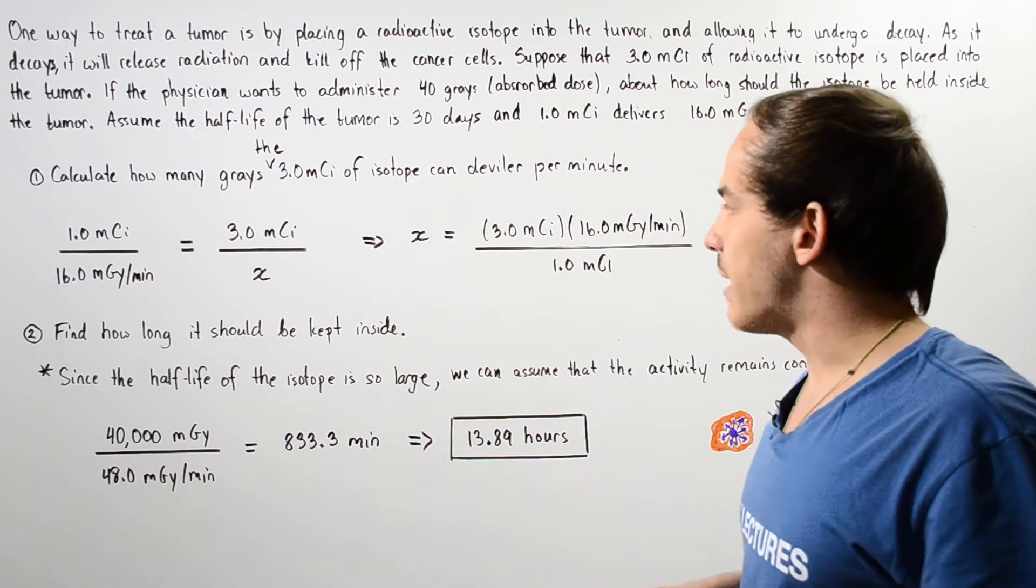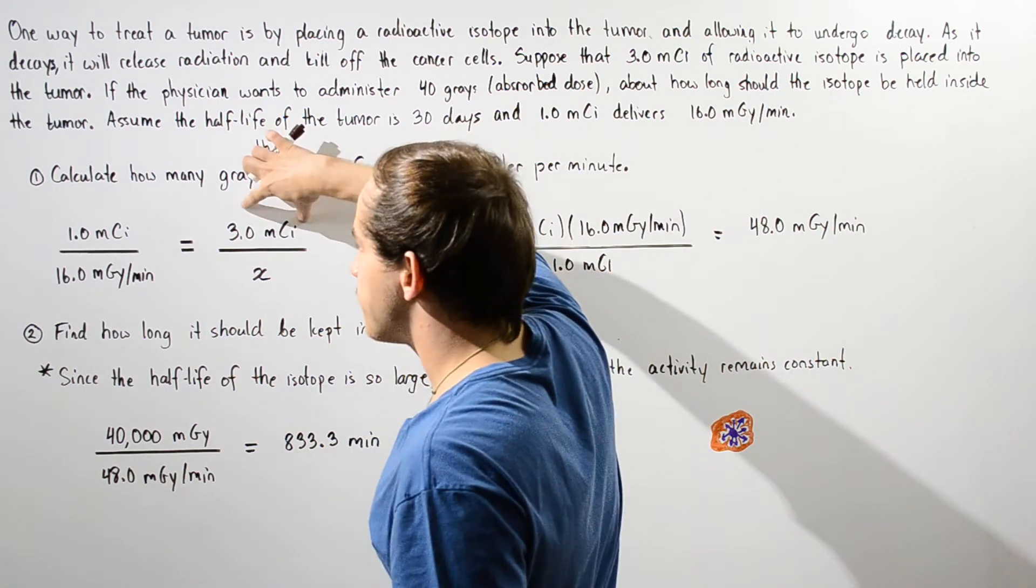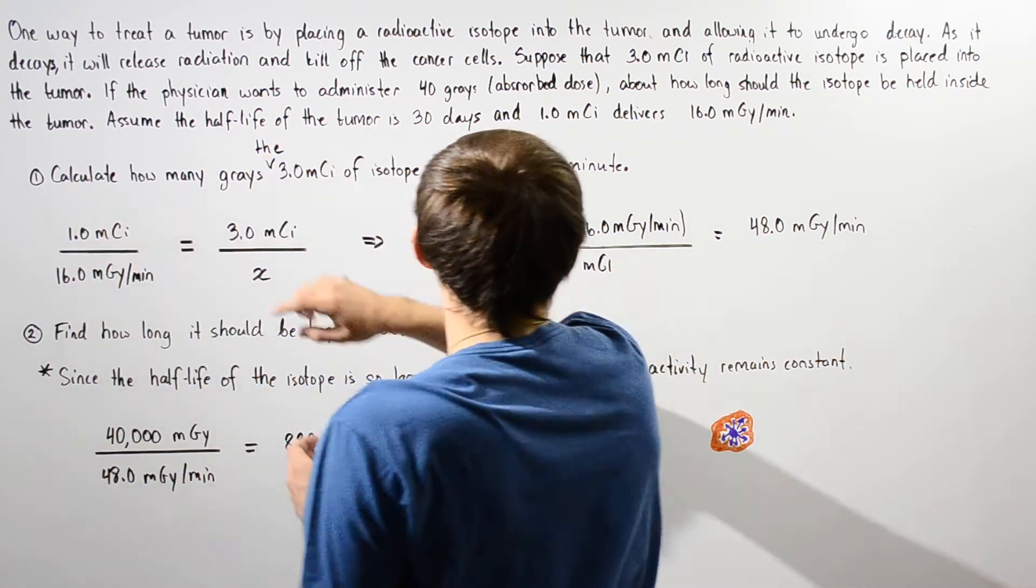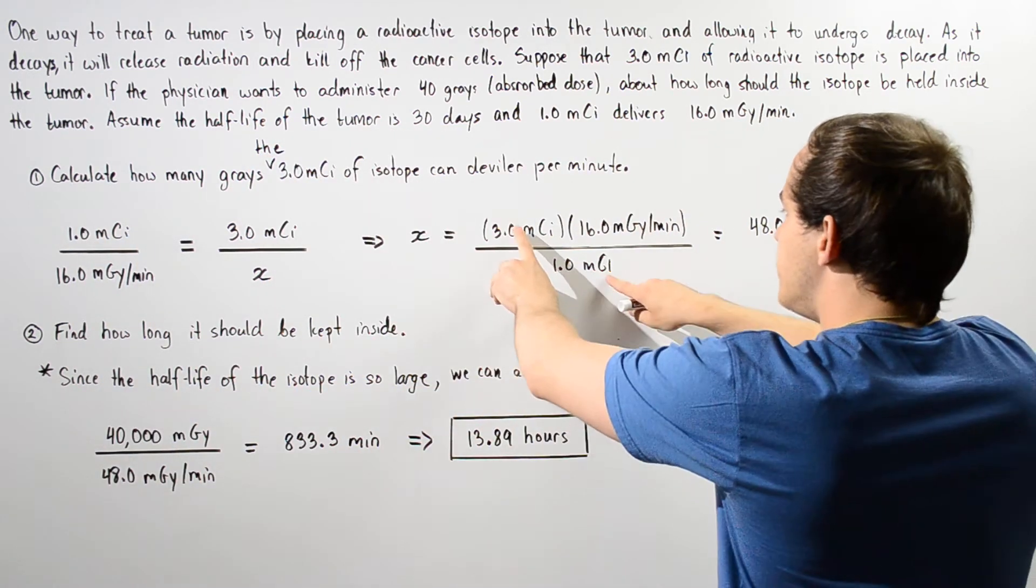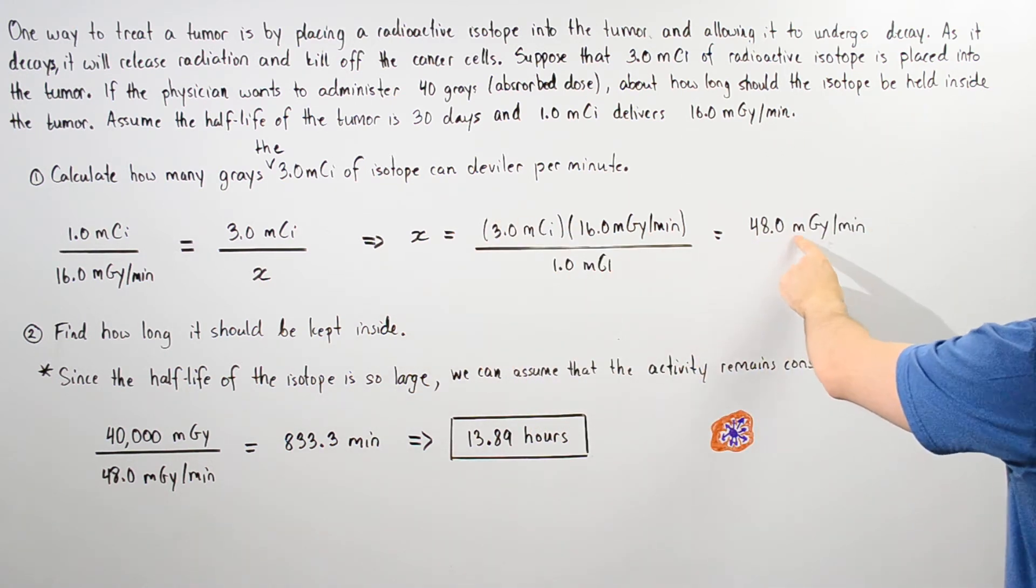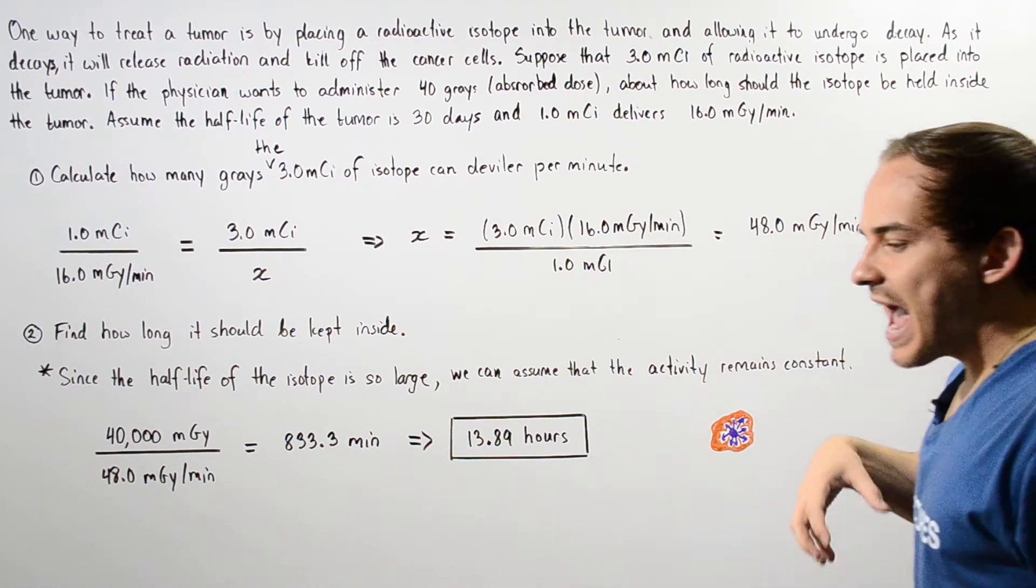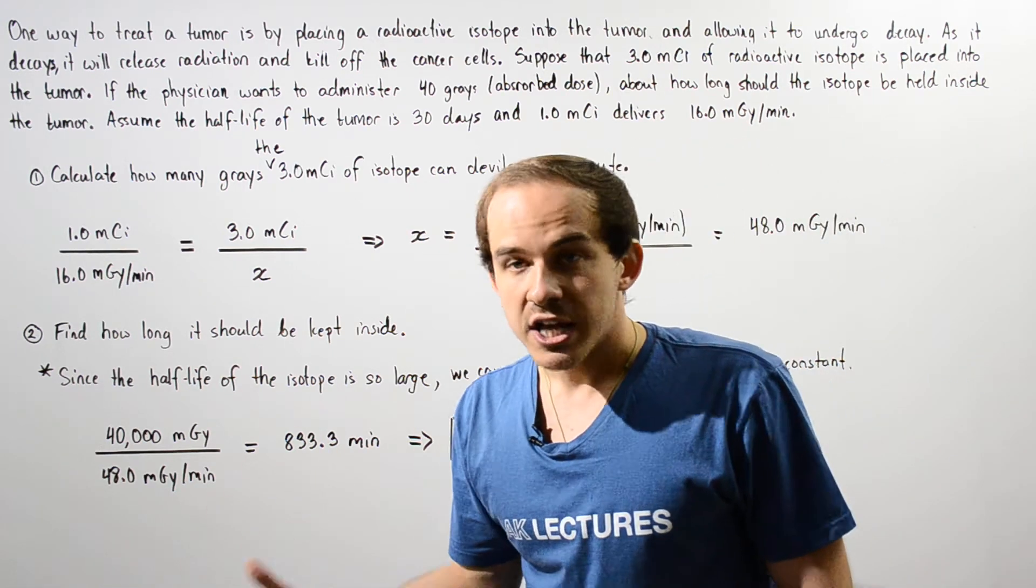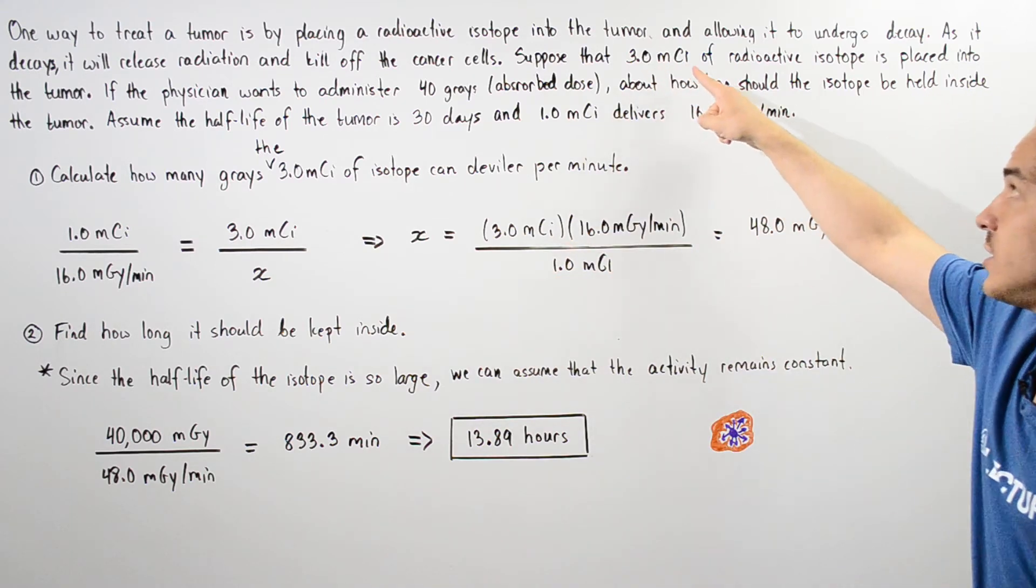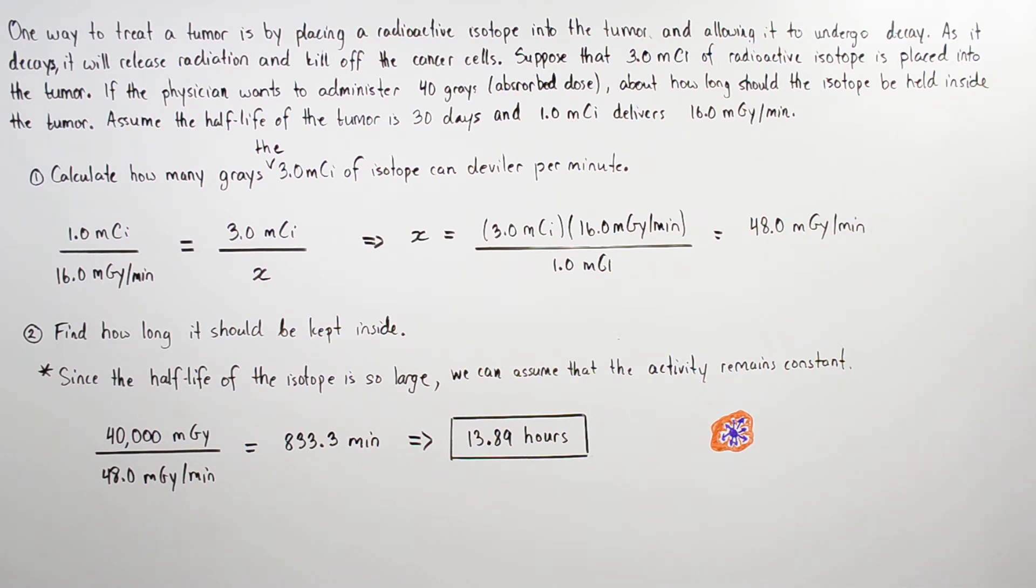Let's solve for x by rearranging. X is equal to the product of three and 16 divided by one. Notice that the millicuries will cancel and we're left with 48 milligrays every single minute. This gives us how much radiation this particular three millicurie radioactive isotope can release into the tumor every single minute. Now we can use this to calculate part two.